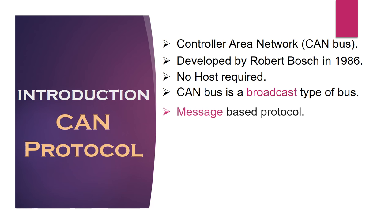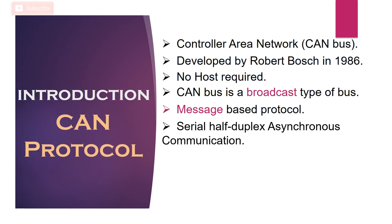Secondly, CAN is a message-based protocol, meaning each message must carry a message identifier based on which the priority of the message will be decided. There is no need for node identification in the CAN network, which makes it very flexible to insert or remove a node from the network. CAN is a serial, half-duplex, and asynchronous type of communication protocol — asynchronous because there is no need for a clock signal between sender and receiver to synchronize the data.